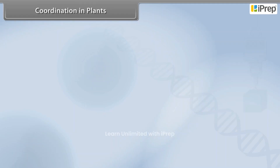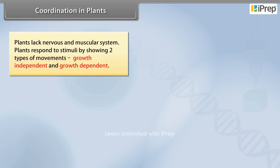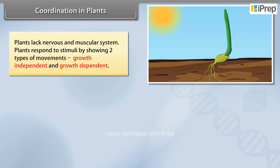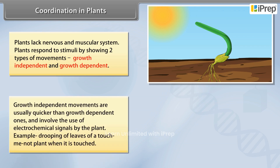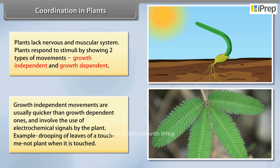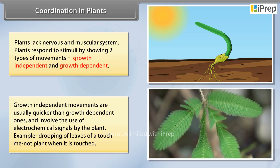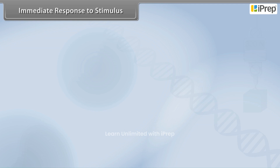Coordination in plants: plants lack a nervous and muscular system, so they respond to stimuli by showing two types of movements — growth independent and growth dependent. Growth independent movements are usually quicker than growth dependent ones and involve the use of electrochemical signals. For example, the drooping of leaves of a touch-me-not plant when touched is an immediate response to stimulus.